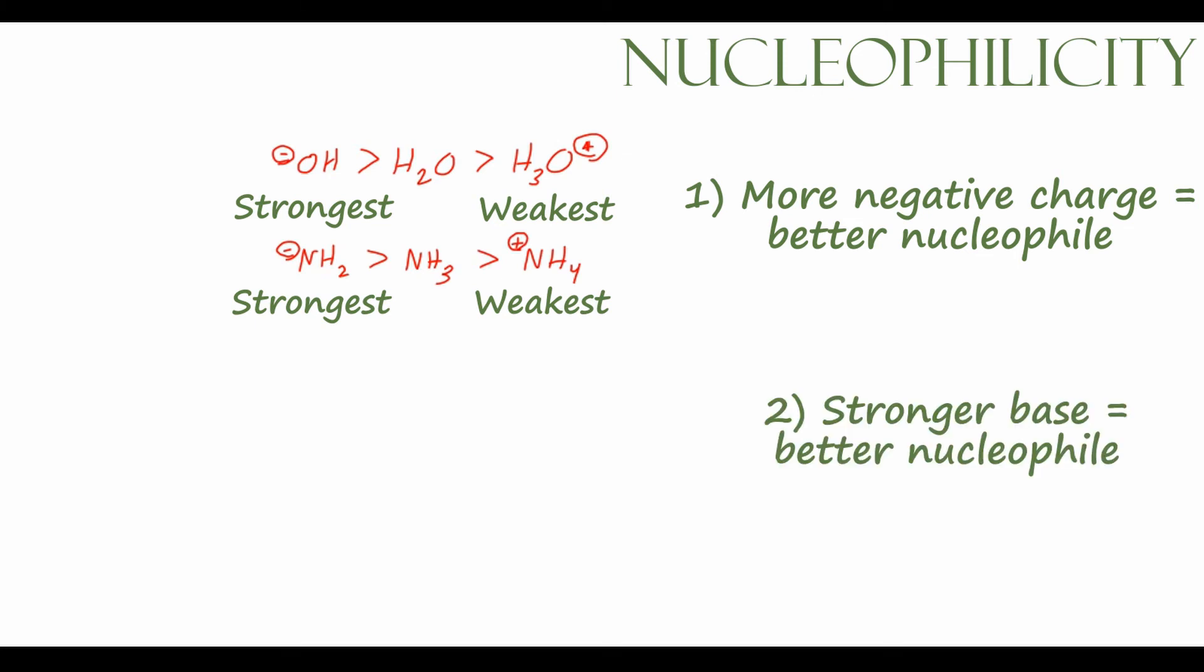The second property is basicity. So stronger bases make for better nucleophiles in general. So if we look at atoms from the same period of the periodic table, we can look at maybe NH2⁻, OH⁻, and F⁻, so all from the second period right next to each other on the periodic table. We can compare their basicities pretty easily. So we know that NH2⁻ is the strongest base of these three, because NH3, its conjugate acid, is the weakest conjugate acid.